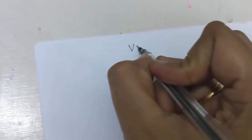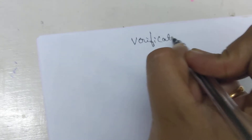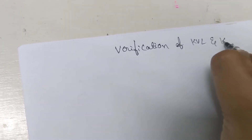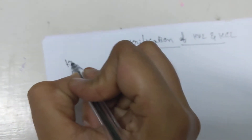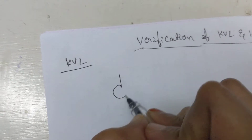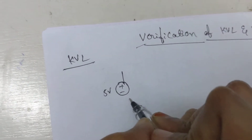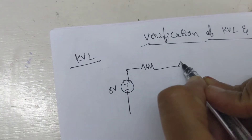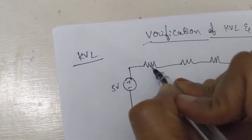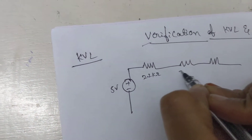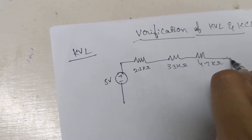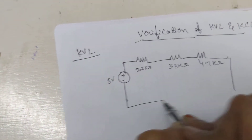Good morning everyone. In today's video we are going to see the verification of KVL and KCL for a given circuit. For the verification of KVL, I am assuming a circuit which is excited with a DC voltage source of 5 volts and connected to a series of three resistors whose values are 2.2 kilo ohms, 3.3 kilo ohms, and 4.7 kilo ohms.